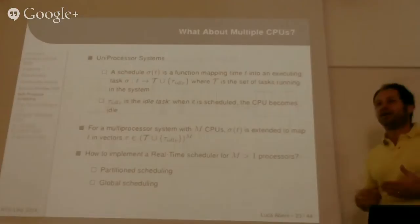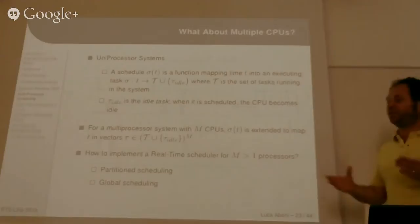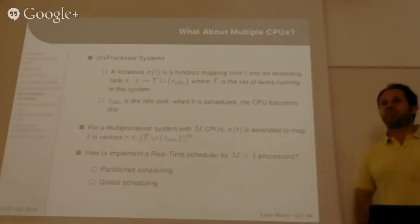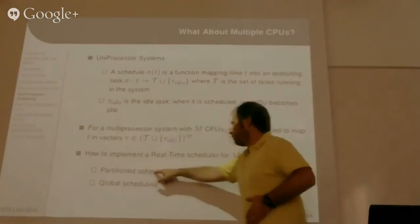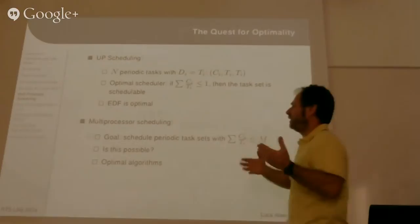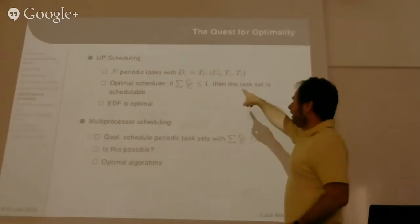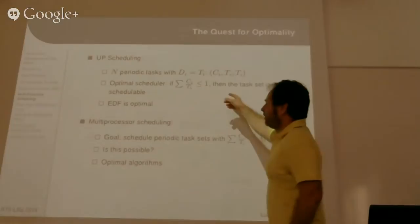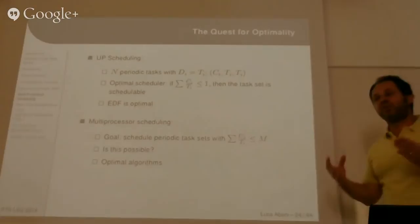Now let's consider real-world systems. Today, systems with only one CPU or one core are very limited. Most systems have multiple CPUs or CPUs with multiple cores. Which kind of algorithm can we use in this case? We have mainly two possibilities: partitioned scheduling or global scheduling. The goal is still to have a scheduling algorithm able to schedule tasks respecting all deadlines. We would like an optimal scheduling algorithm. On a uniprocessor, EDF is optimal. Can we find an optimal scheduling algorithm for multiprocessor systems?